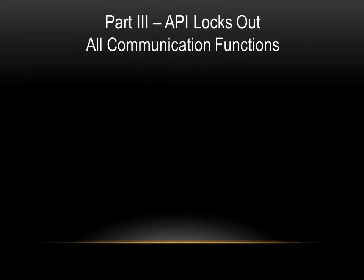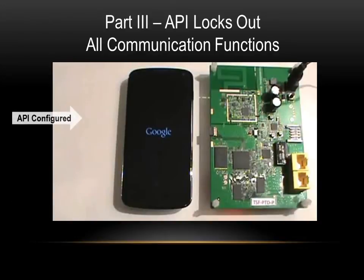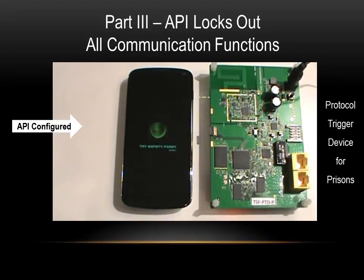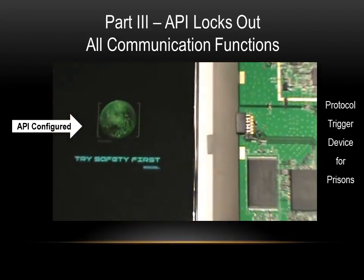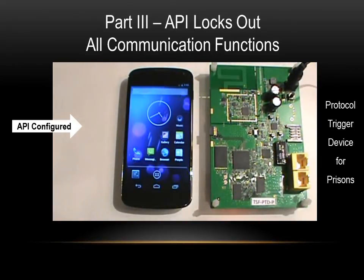Here in Part 3 I am going to demonstrate how an actual API configured phone completely locks out all communication functions when in range of the TriSafety First protocol trigger device for prisons. As I power on the phone it will appear to be fully operational but it is not. In fact, not one single communication feature on this phone is functioning.